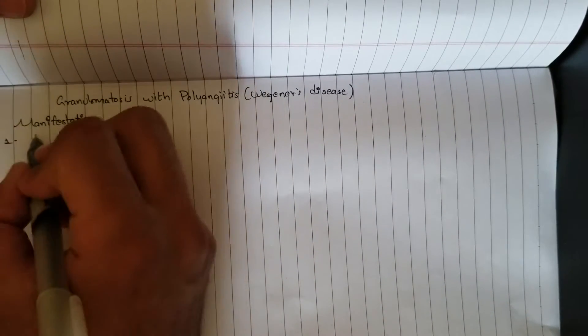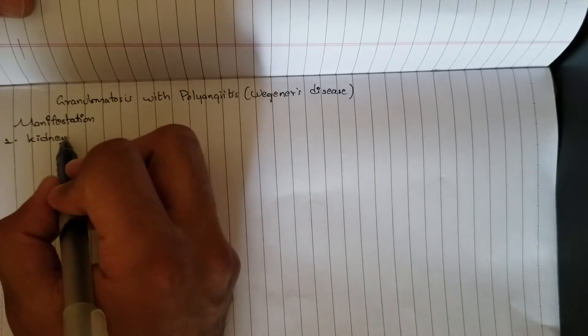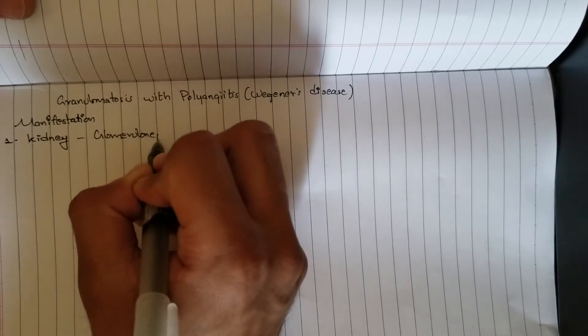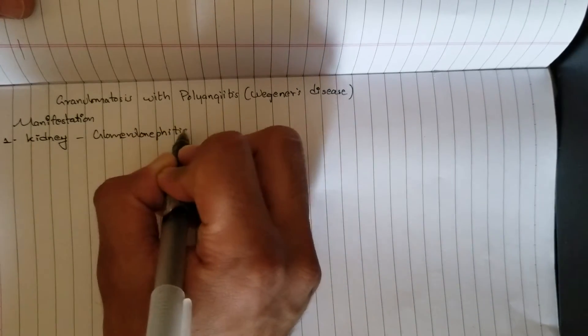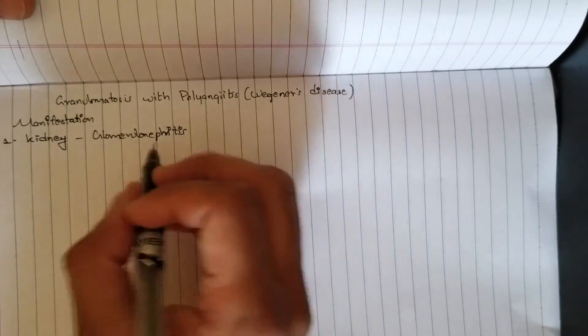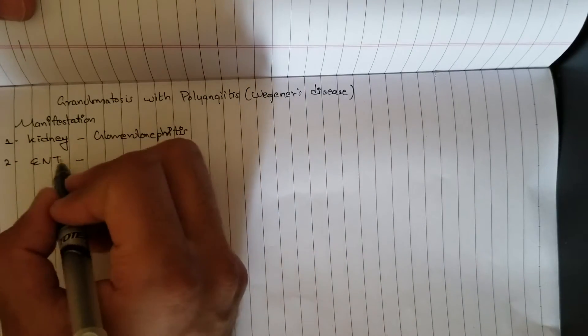Let's go to the manifestations first. First one is in the kidney. The only manifestation I found is glomerulonephritis, and it's also a major one, so there is no mnemonic for this. Another is in the ENT, ear, nose, and throat.